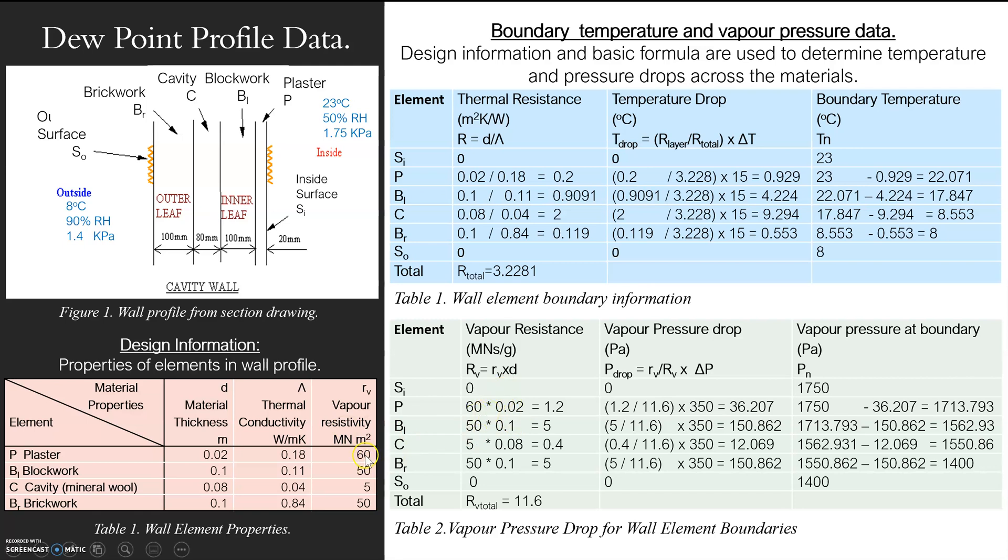So 60, which I had as my vapor resistance, and I'm timesing that by 0.02. Just bear in mind, I've got mega newton meter squared and mega newton there. So make sure your values are the same. If it was in newtons, you'd need to convert that to newtons. Just make sure you're aware of that.